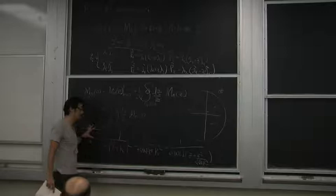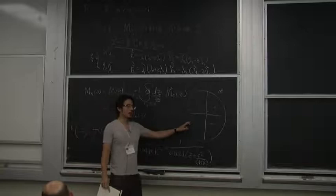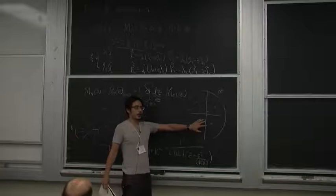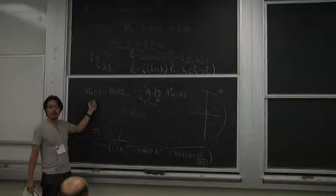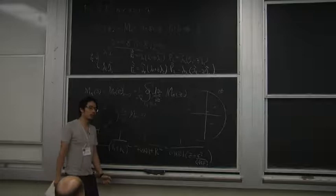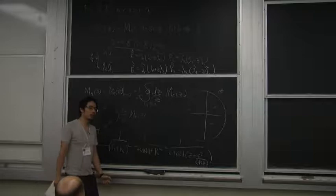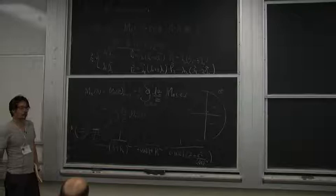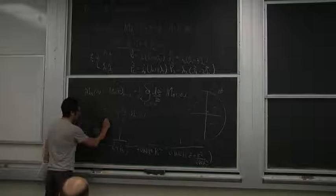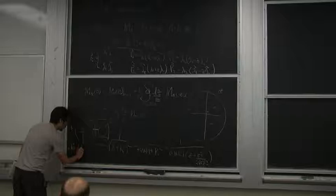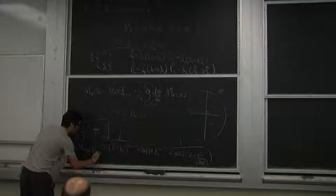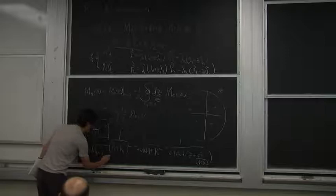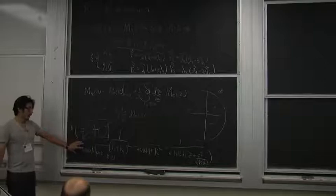Each finite pole corresponds to a possible diagram where legs 1 and 2 sit on both sides of a propagator. Once we know where the poles are and what the residues are, we can reconstruct the function. The residue, when hitting this pole, corresponds to this particle going on shell — the residue is basically the product of the left amplitude multiplied by the right amplitude: M_{n-q} times M_{q+2}.